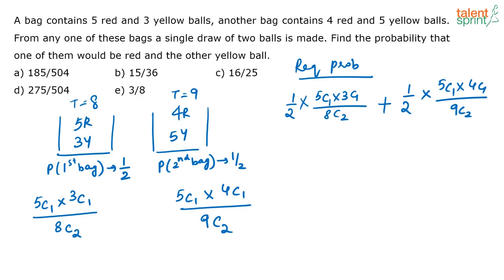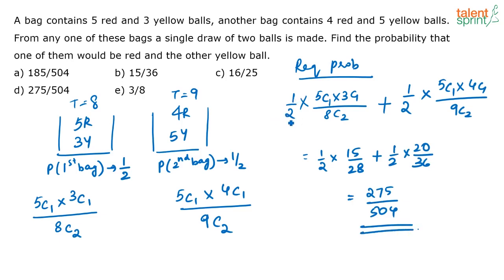Many of you have already said the answer is option D. When you solve this, you get 1/2 × 15/28 plus 1/2 × 20/36, which simplifies to 275 by 504. The 1/2 comes from having two bags and selecting one before picking balls. So the correct answer is option D: 275 by 504.